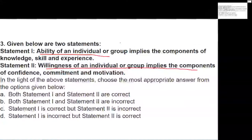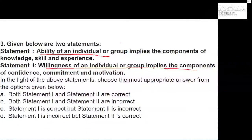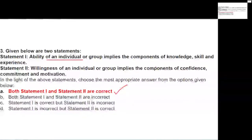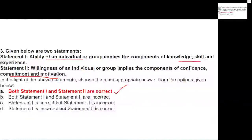The answer is that both statements are correct. When we talk about the ability of an individual or group, it implies knowledge, skill, and experience. And willingness implies confidence, commitment, and motivation of that individual or group. So both statement one and statement two are correct.